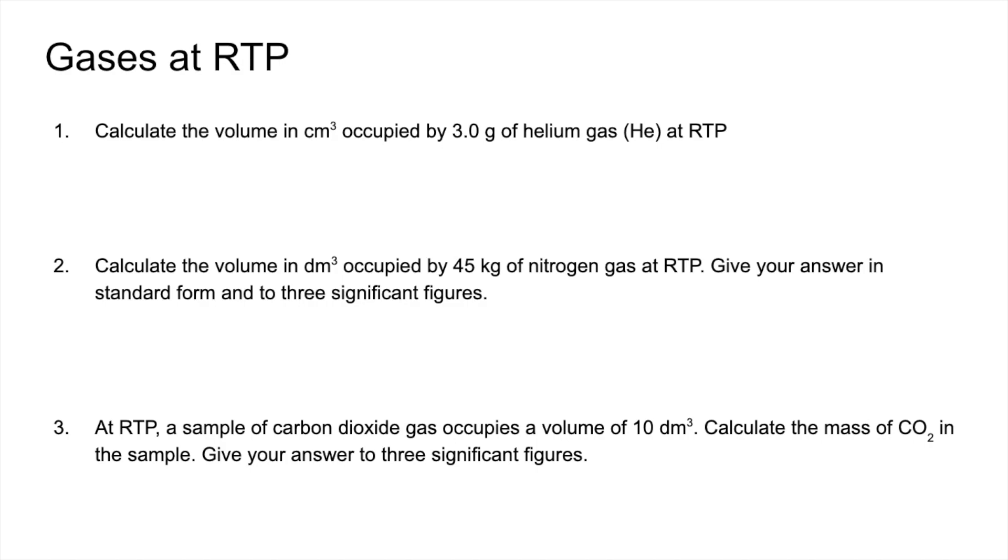Okay, so the first one, got to work out how many moles of helium gas we've got first. So that's mass over MR. So 0.75 moles of helium. And then to turn that into a volume at RTP we multiply by 24. That gives us the volume in DM cubed. And then we multiply by 1,000 to get into CM cubed. So the answer there, 18,000 CM cubed.